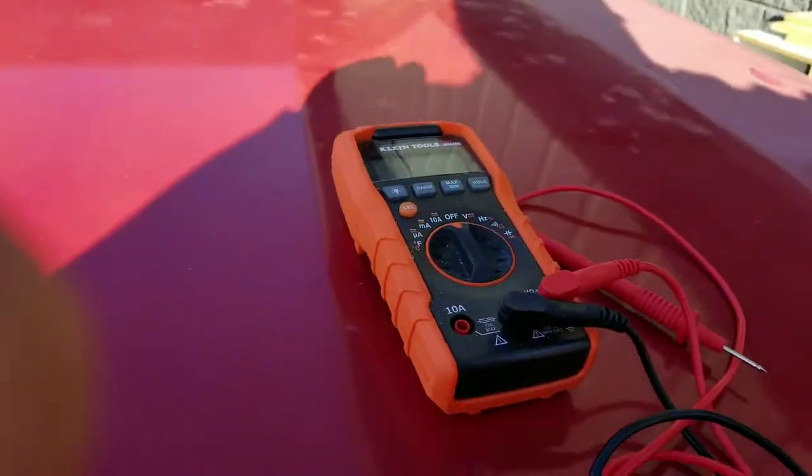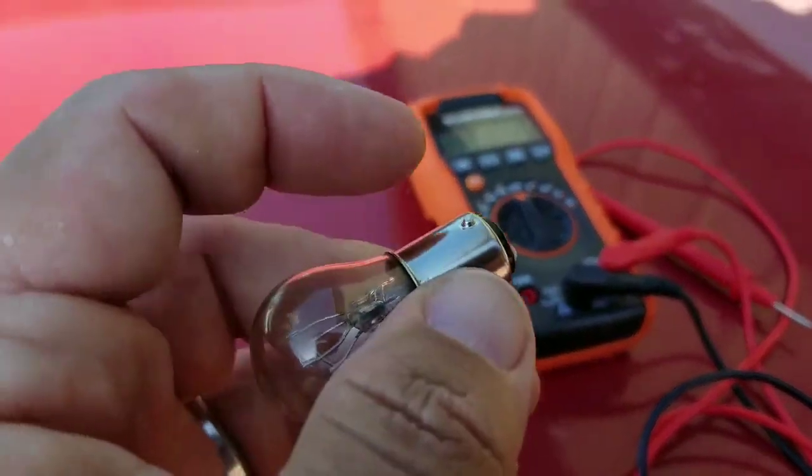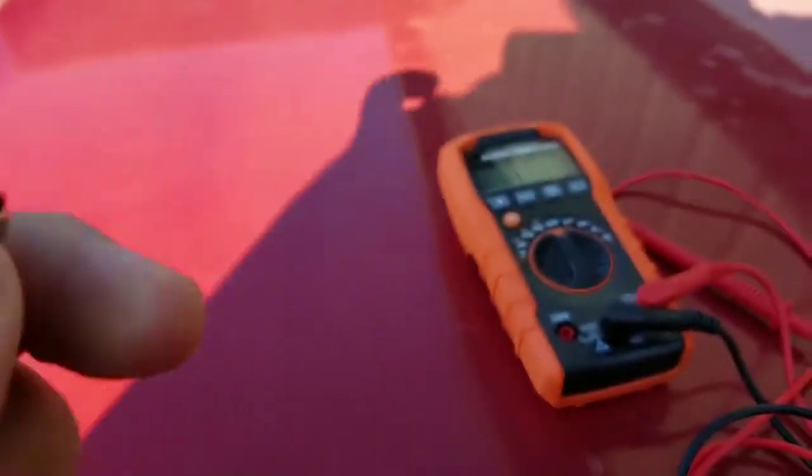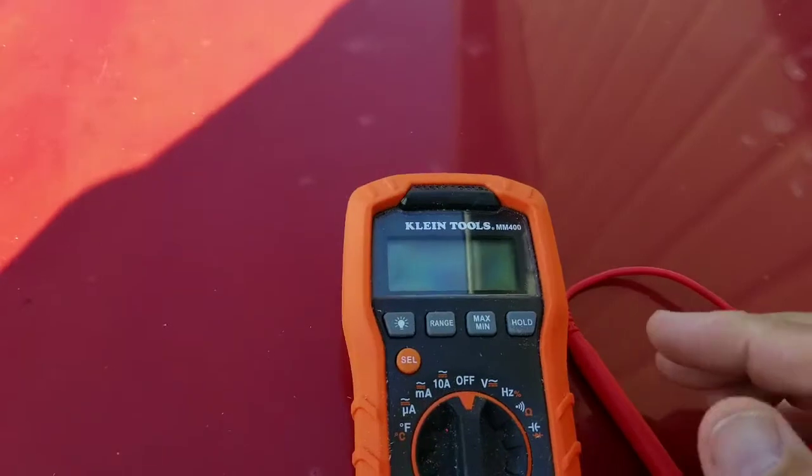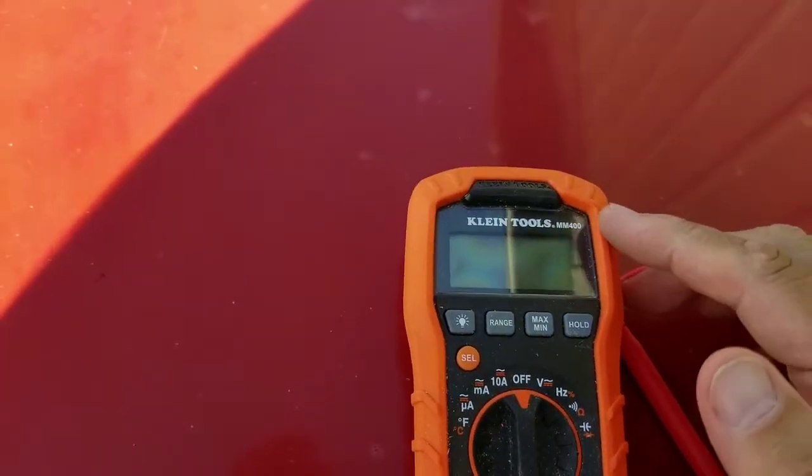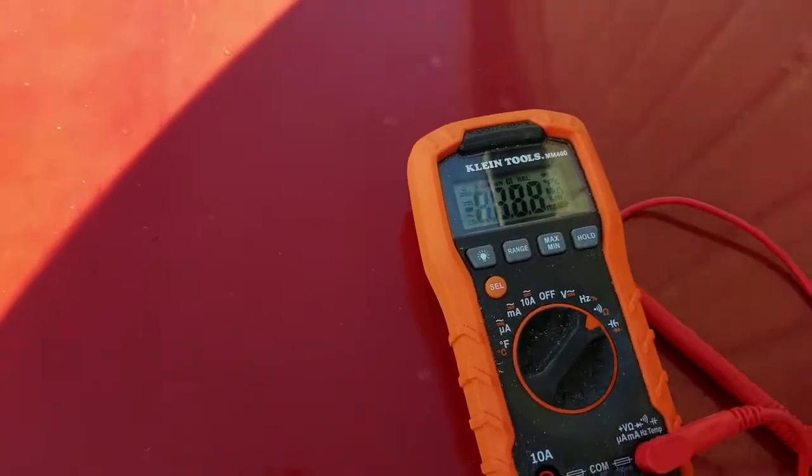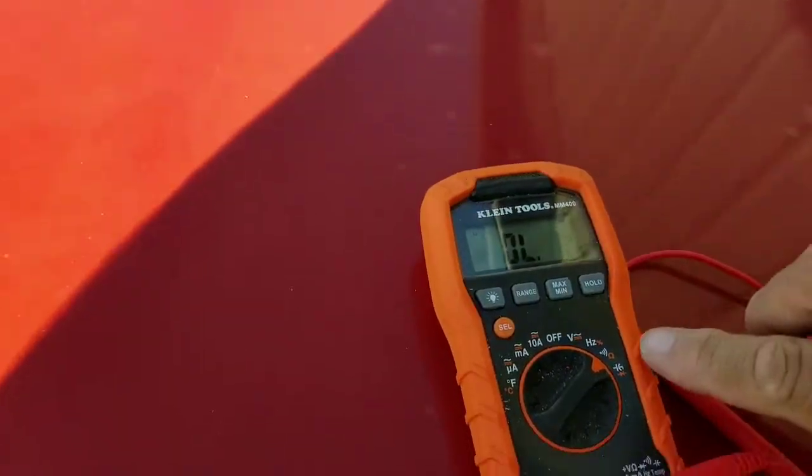I'm going to put the ground here, I'm going to put my positives right here. I'm going to turn this Klein tool, I'll put a link in the description. We're going to turn it to this little symbol right here.